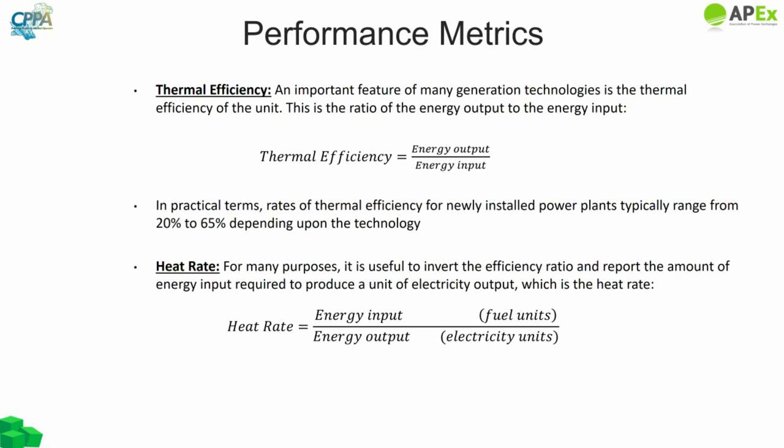Gas-fired combustion turbines achieve energy conversion efficiency of 20–35%. Natural gas combined cycle units usually operate with thermal efficiencies between 50–60%, and recent improvements in turbine materials have enabled efficiencies up to 65%. For many purposes, it is useful to invert the efficiency ratio and report the heat rate — the amount of energy input required to produce a unit of electricity output — given as the ratio of energy input to energy output.